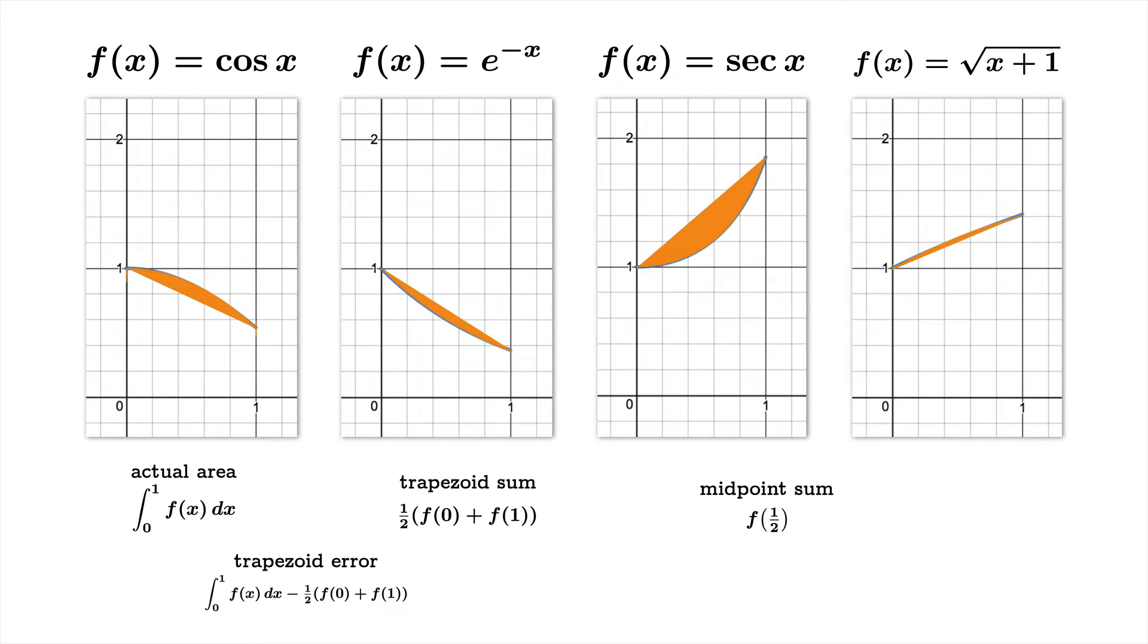Then we'll find the trapezoid error. We'll take the actual value, we'll subtract off what the trapezoid sum gave us. And you can see a picture of the trapezoid error here, these sort of slivers.